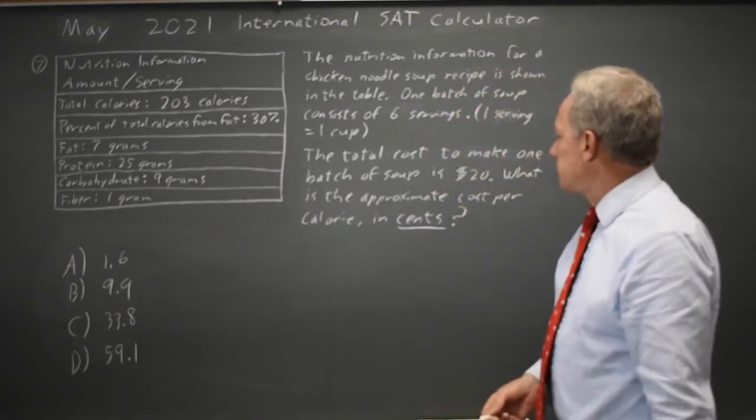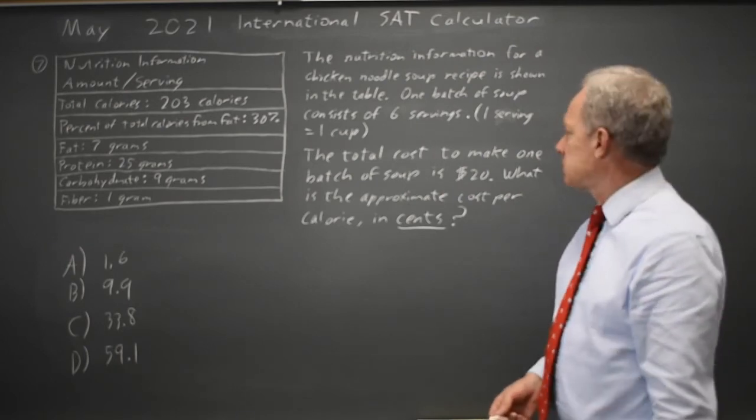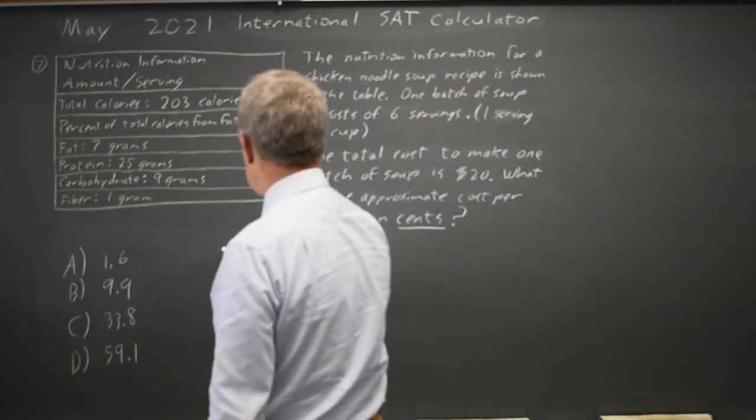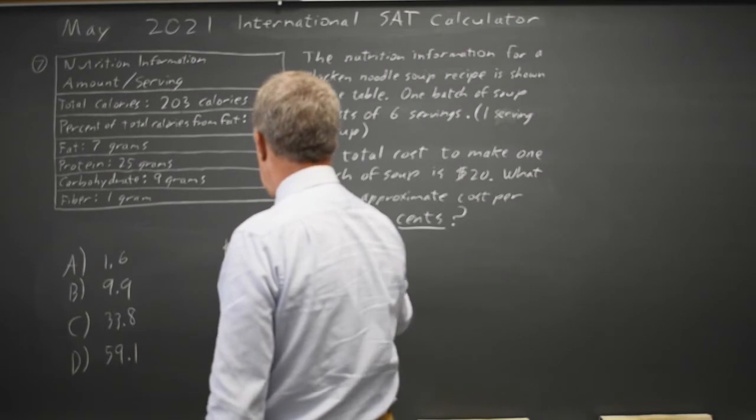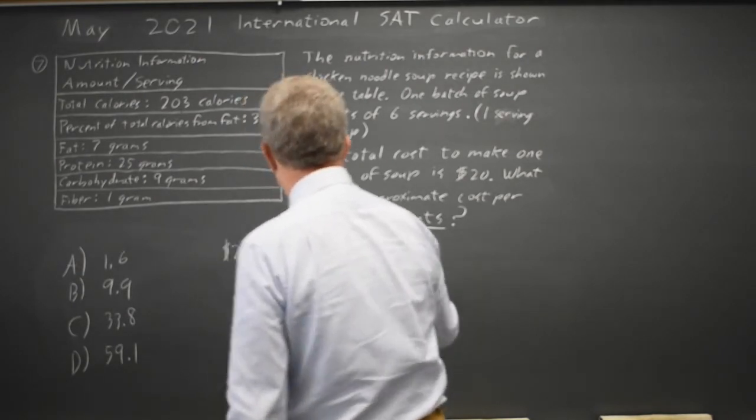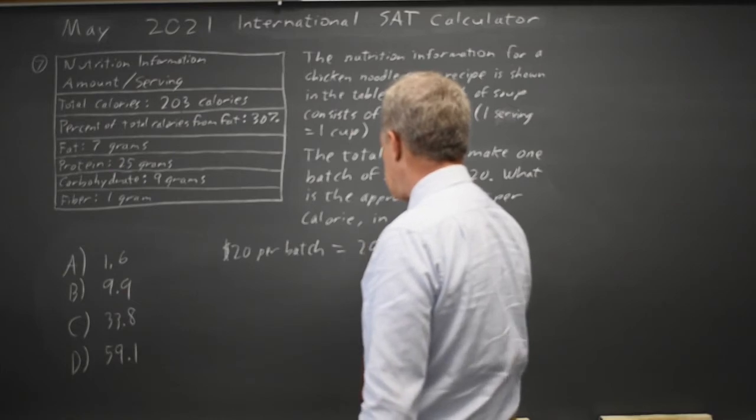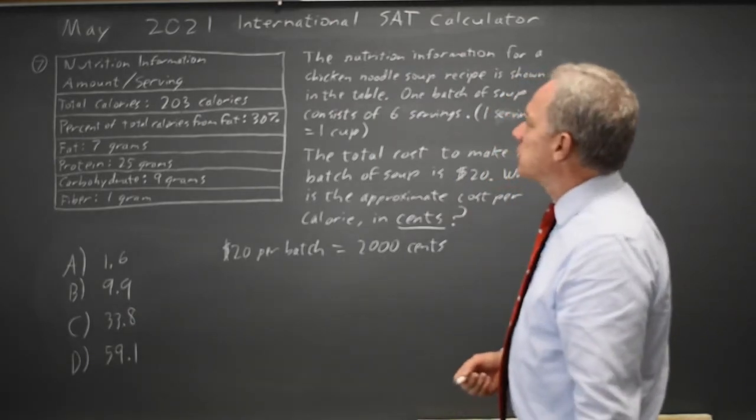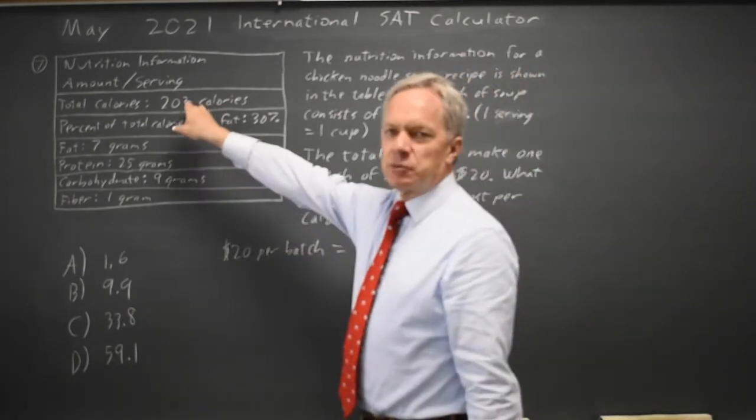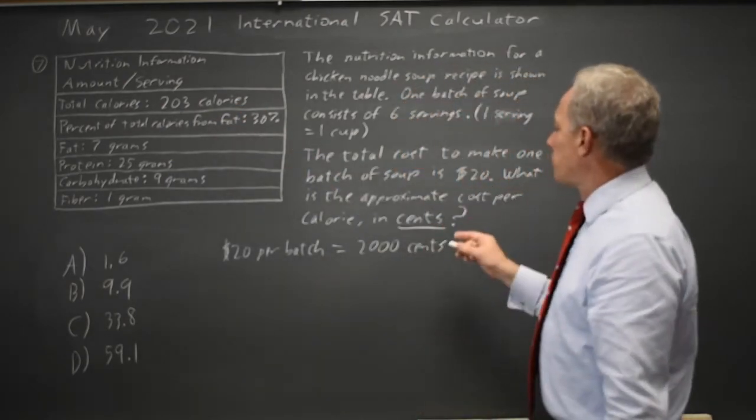In particular, they want to know the cost per calorie in cents. It's $20 per batch, which is 2,000 cents, and there are 203 calories per serving, but they're asking per batch.